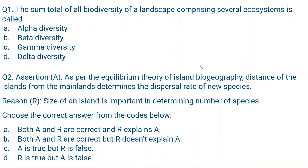Question number 1. The sum total of all biodiversity of a landscape comprising several ecosystems is called: A. Alpha diversity, B. Beta diversity, C. Gamma diversity, or D. Delta diversity. The correct answer is C, Gamma diversity.